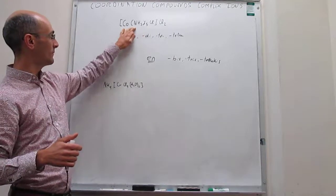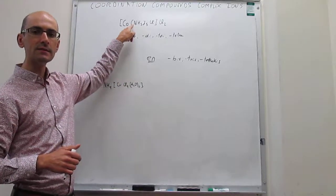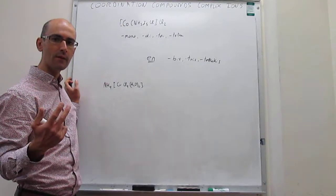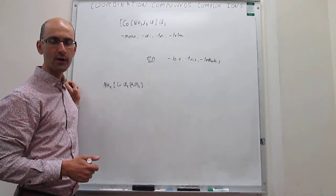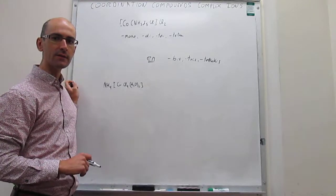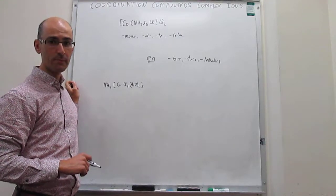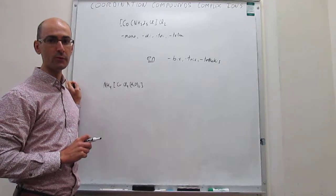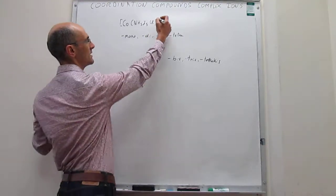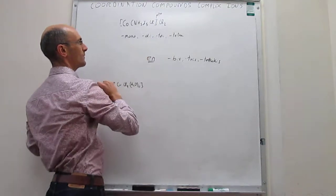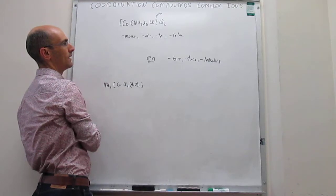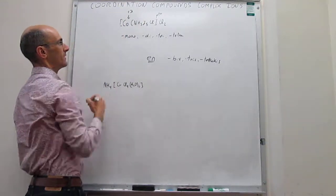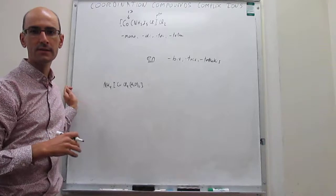Again, to name the complex ion: you first name the ligands, then the transition metal. The ligands must be alphabetical, and you have to specify prefixes to indicate stoichiometry. After naming the ligands, you name the transition metal and always specify the charge in Roman numerals between parentheses. In this case, the complex has a charge of plus 2; because of the negative chloro ligand, the cobalt charge is plus 3, written as cobalt(III).